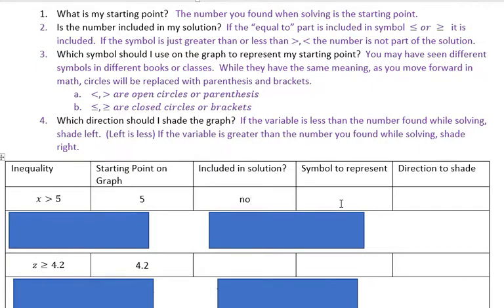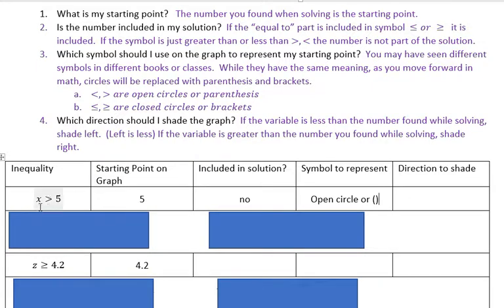So what symbol are you going to use to represent it? If you have greater than or less than, you use either an open circle or parentheses. Then you have to decide which direction you're going to shade. You have to look back and ask: is my variable greater than the number I found or less than? When the symbol opens to the variable, that means the variable is greater. So X is greater than five, and I'm going to shade to the right.